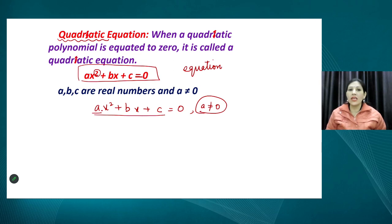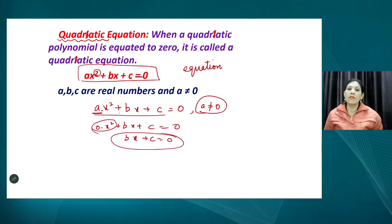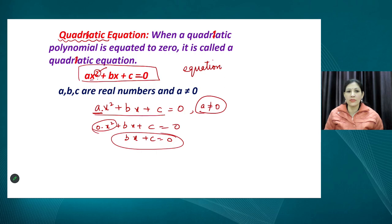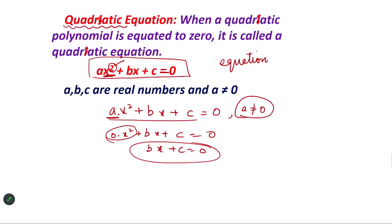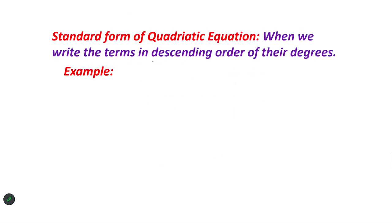One most important condition is that A should not be 0 — that means the coefficient of X squared should never be 0 in a Quadratic Equation. Because if A is 0, that complete term will vanish, and the equation will become a linear equation. The highest degree must be 2, and the coefficient of X squared can be root 2, root 7, 2, minus 5, or minus 5 by 7 — but never 0. We have also studied about the standard form of the Quadratic Equation.